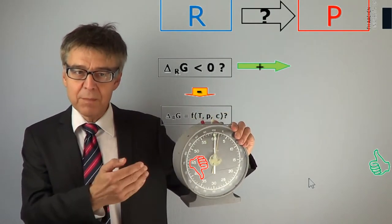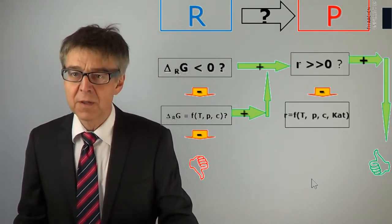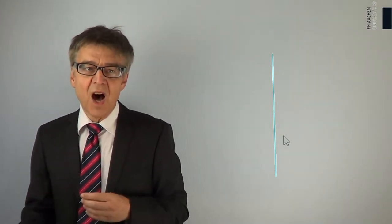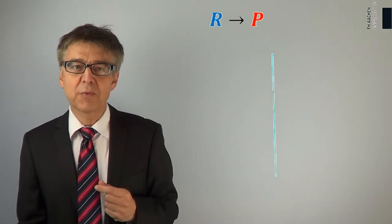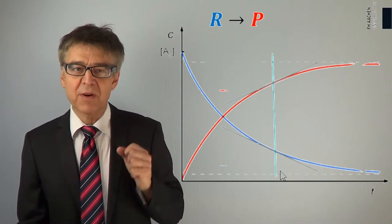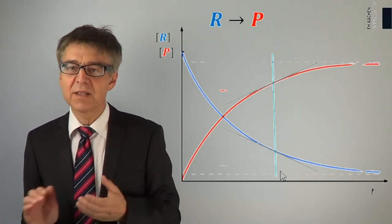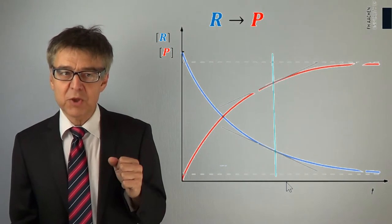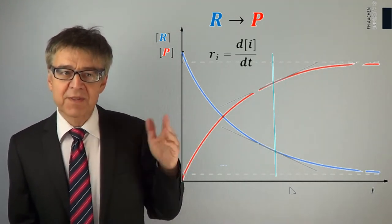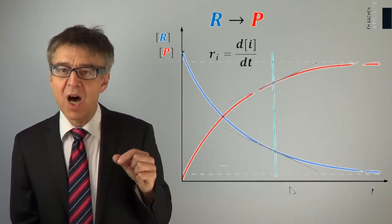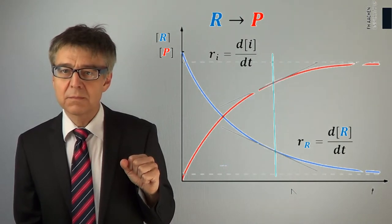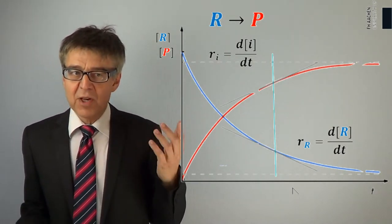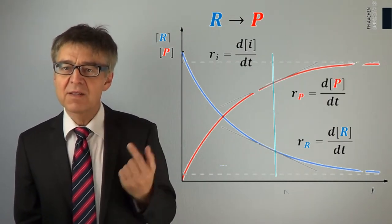Which parameters speed up or slow down the reaction? We consider a simple process: reactant R transforms into product P. During this process, we track the concentration of both reactant and product. The blue curve describes the dependence of the reactant's concentration with time, and the slope of the curve represents the rate of decomposition, R sub R. The rate curve shows the concentration of the product P varying with time, the slope of this curve describing the rate of formation, R sub P.